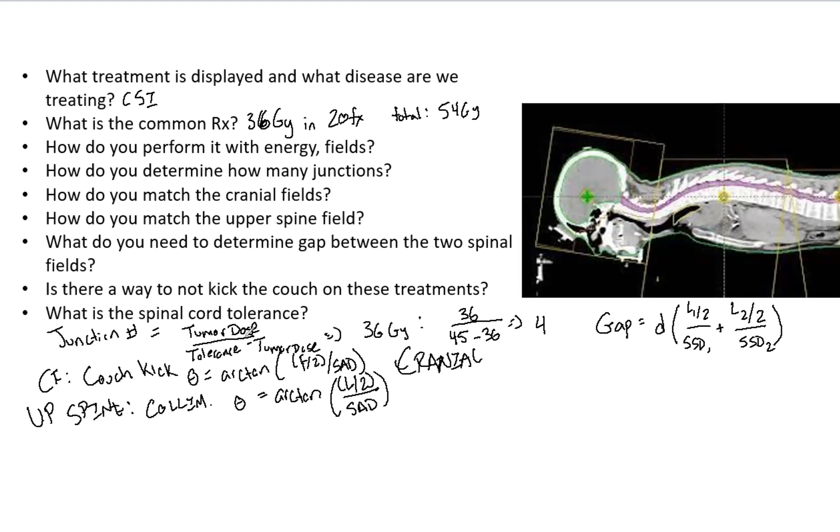What is the spinal cord tolerance? That is 45 Gy. The TD 5/5 is actually 45 Gy. What that means is that five percent of people will suffer complications in five years. That is what the 45 Gy means.